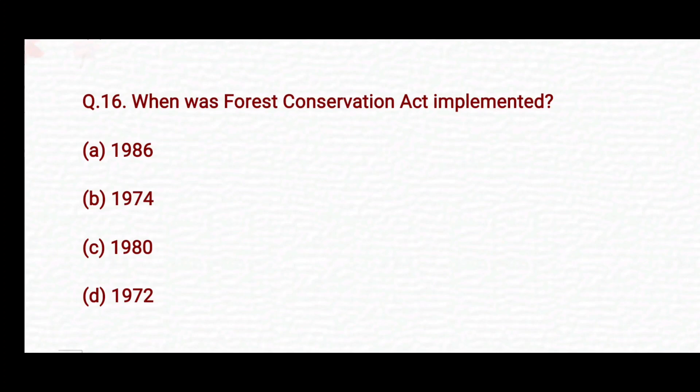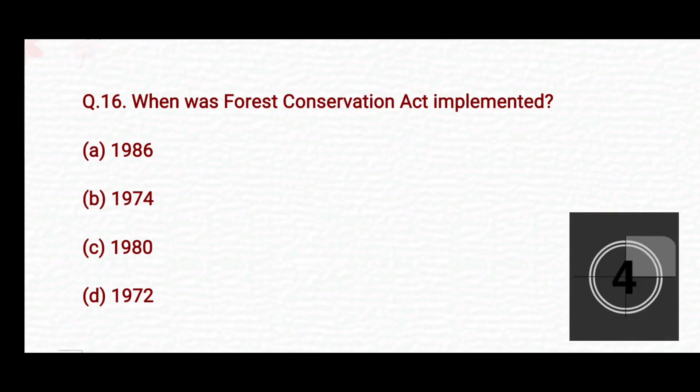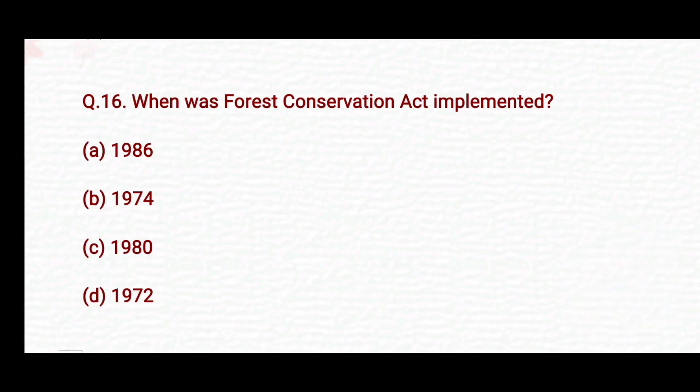When was the Forest Conservation Act implemented? Option A: 1986. Option B: 1974. Option C: 1980. Option D: 1972. The right answer is Option C — 1980.